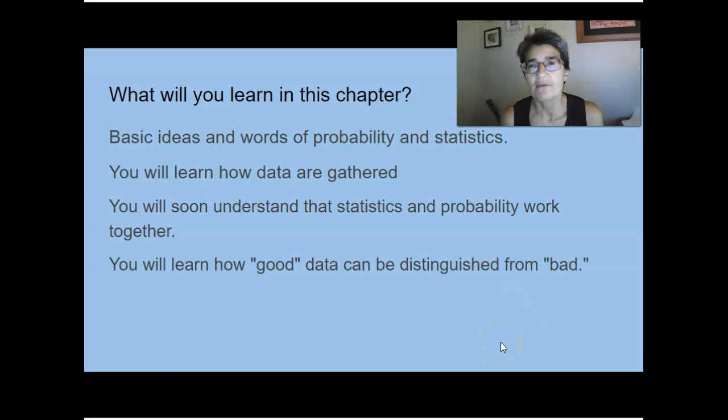So what are you going to learn in this chapter? In chapter one you're going to learn some basic ideas and words of probability and statistics, so lots of terminology. You'll learn how data are gathered, so different sampling techniques and the differences between surveys and experiments. You'll understand the connection between how statistics and probability work together, and you'll also learn things like how good data can be distinguished from bad. Those are some main topics. There's some other details in this chapter but that's basically what you're looking forward to learning in chapter one. All right, enjoy and I'll see you guys around in the lessons.